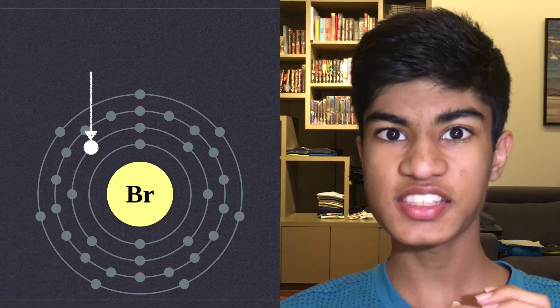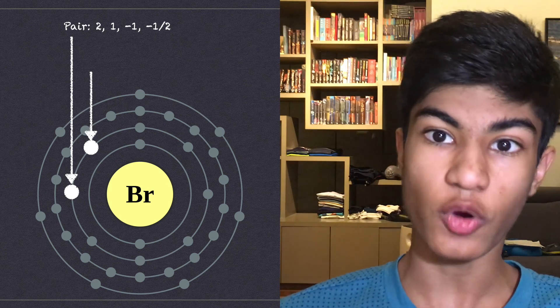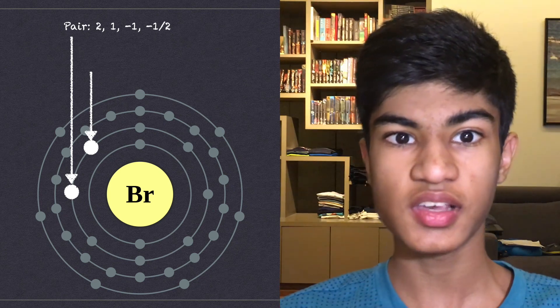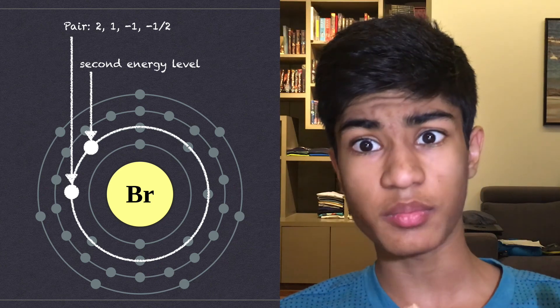Alright, now that you know about the quantum numbers, let's try out another electron. Here's an atom of bromine. Let's pick an electron. Let's also assign values to its pair to make it more straightforward for us to find the electron's numbers. The electron is on the second energy level. So N, its principal quantum number, is 2.